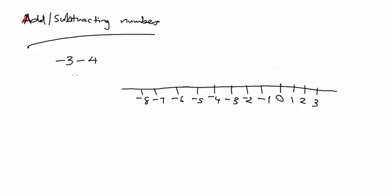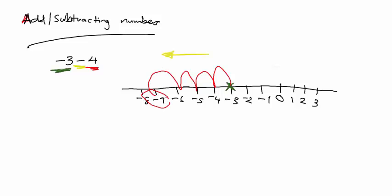Your first number is your starting position. Because there is a minus in front of it, your starting number is minus three. Your next sign - the minus - tells you we're going to move this way. And the final number, four, tells you we're going to move four steps in that direction. One, two, three, four. So the answer is minus seven.